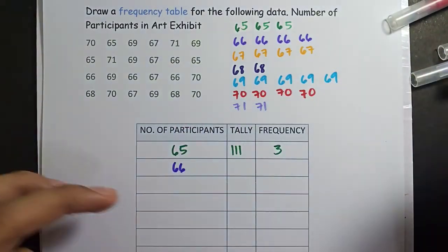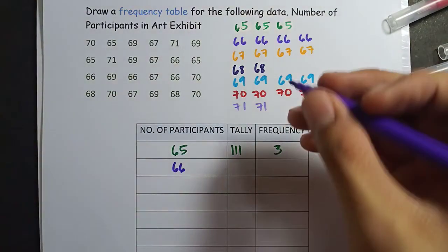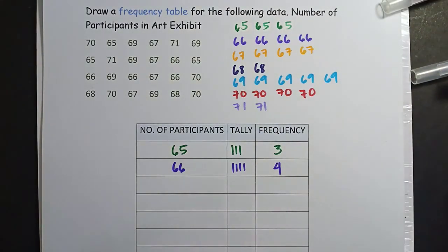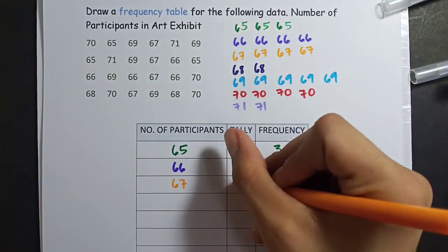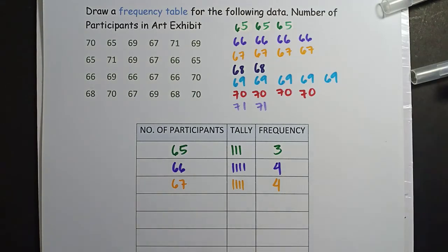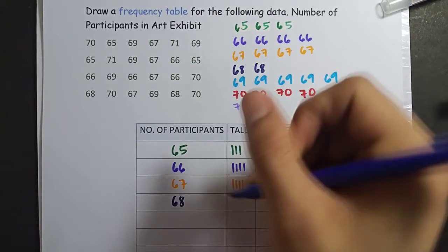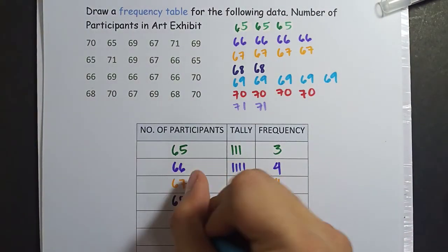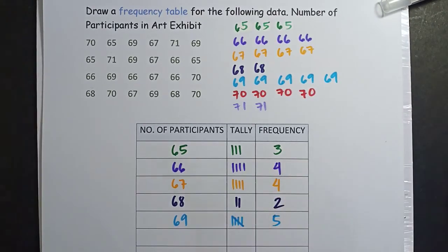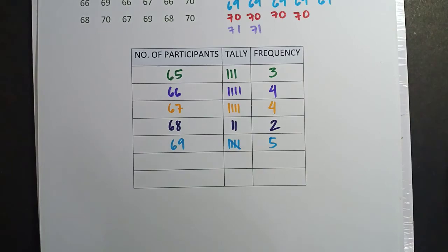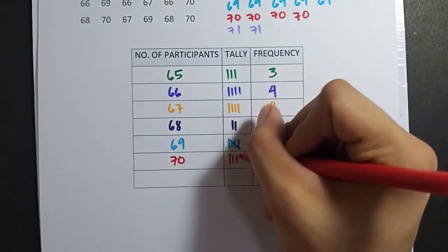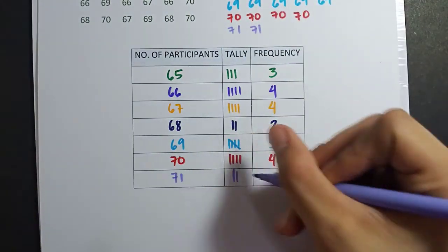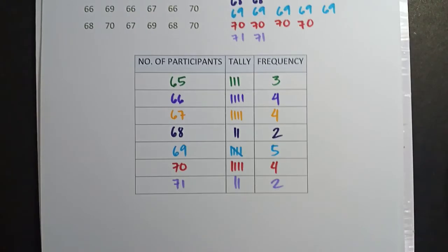You can skip the tally. You can go directly to frequency if you can count it. If you've arranged your data, no problem. But for the sake of our activity given to you or this table, let's include the tally. Next, participants is 66. I'm sorry, I forgot to read this. Number of participants in art exhibit. 66. How many 66 do we have? 1, 2, 3, 4. So our frequency is 4. 67 has 2, just like that. 67, how many 67 do we have? 4. 1, 2, 3, 4. 68, how many 68 do we have? Two. 1, 2. 69, how many? 5. 1, 2, 3, 4, 5. Last two. 70, how many 70? 4. 1, 2, 3, 4. 71, we have 2. 1, 2. And that's how you make a frequency table.